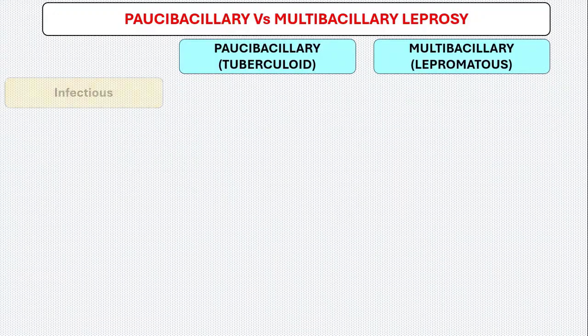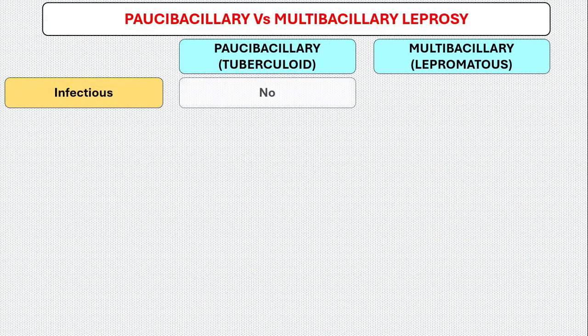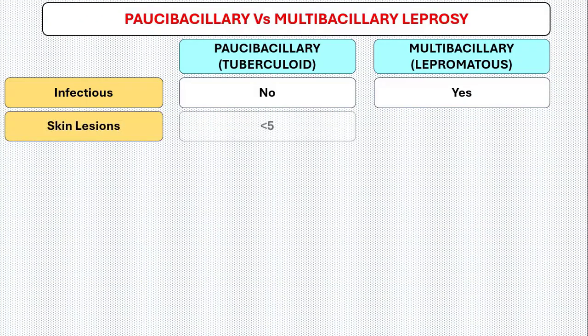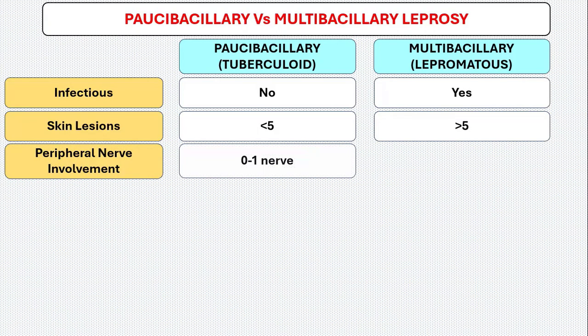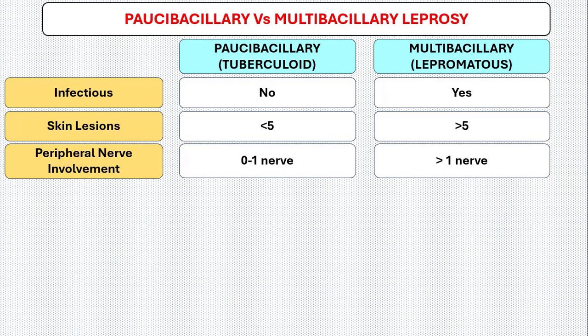Now let us move on to the important differences between paucibacillary and multibacillary leprosy. Paucibacillary leprosy is not infectious; multibacillary is infectious. Skin lesions: less than 5 in paucibacillary, more than 5 in multibacillary. Peripheral nerve involvement: 0 to 1 nerve in paucibacillary, more than 1 nerve in multibacillary.